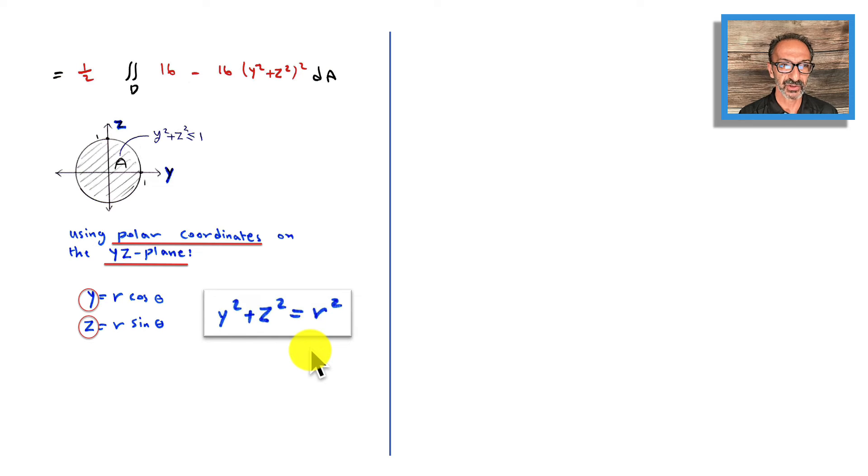Back to the triple integration. After performing the first part, I have two integrations left. This y² plus z² is r², so I have (16 minus 16r²)². I changed colors: green for r, black for theta.